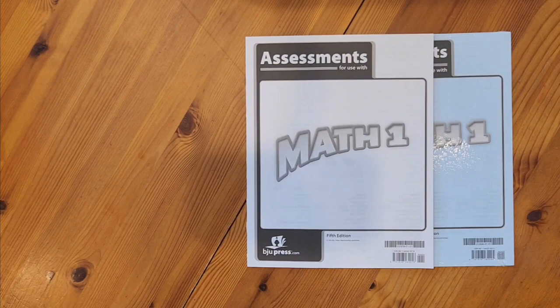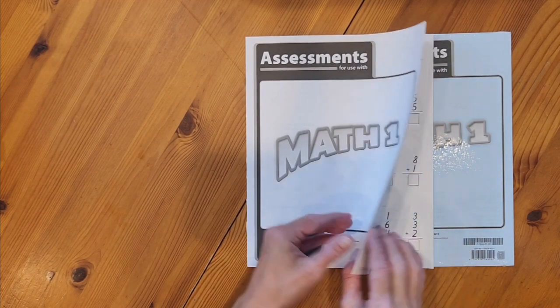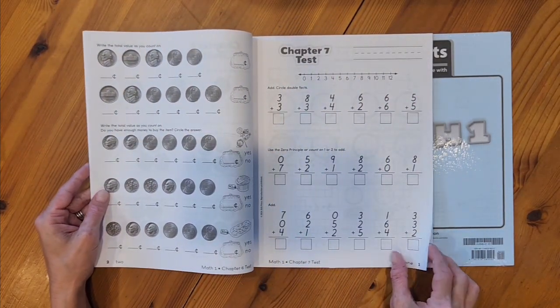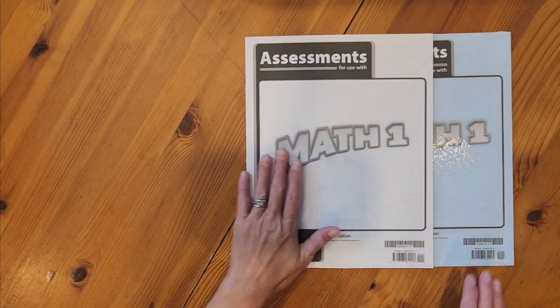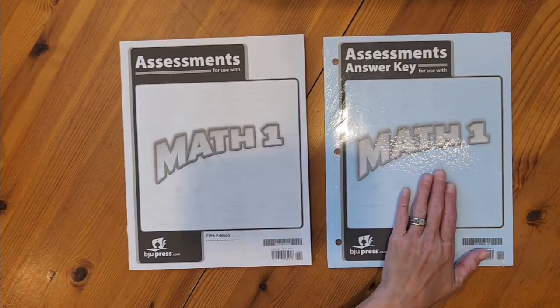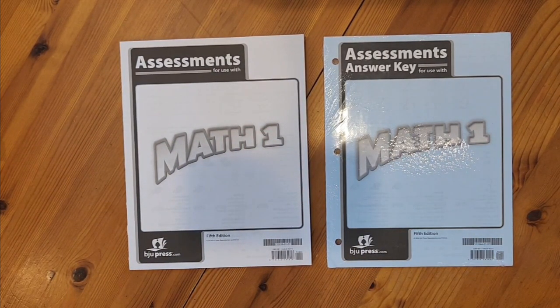The last thing I have for this textbook kit is the assessment packets. So this is the assessment packet that a student would use to take their test at the end of a chapter. And then this packet is where I would go to find the answers. Thanks for joining me as we looked inside of the Math 1 5th edition textbooks. If you have any questions about any of the materials, please feel free to reach out to your local HomeWorks by Precept consultant. We would love to answer your questions.